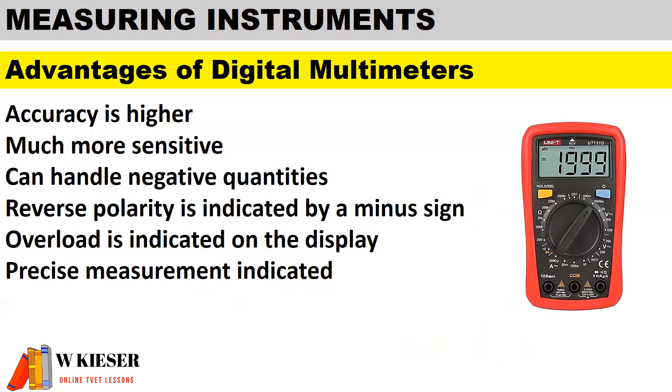Our final point: we're going to look at the advantages of digital meters when compared to the old analog meters. New digital multimeters are more accurate; however, they do tend to be more sensitive. They can handle negative quantities. A reverse polarity, in other words, a negative sign will be used to indicate reverse polarity. Overload is indicated on the display, and precise measurement is indicated.